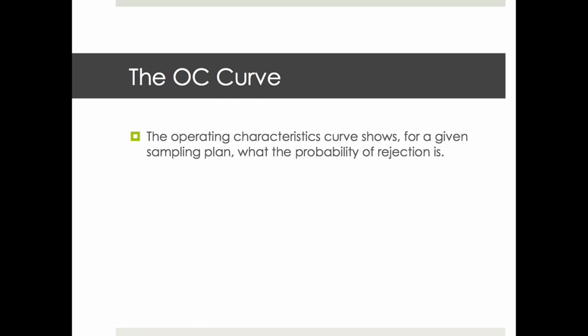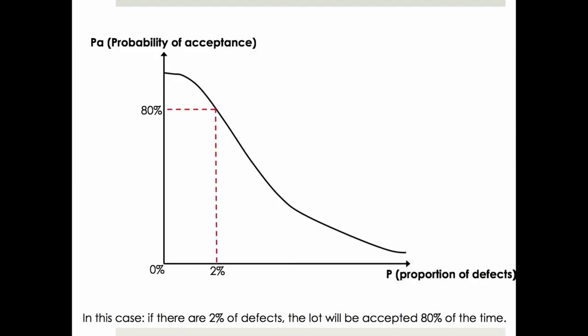I want to introduce the OC curves — Operating Characteristics Curves — that show what the probability of acceptance is. This is probability of acceptance on the Y-axis (100% to 0%) and the proportion of defects on the X-axis. So in this case, when there's 2% of defects, the probability that we accept the batch is 80%. Very simple — just a curve.